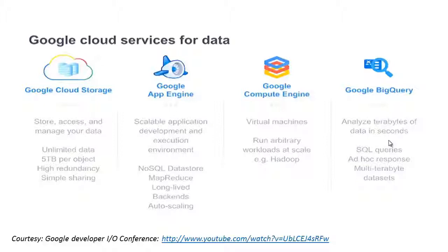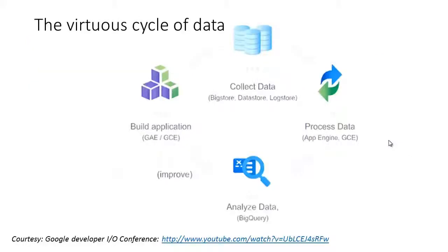BigQuery lets you query billions and billions of rows and get answers in mere seconds. Going back to our four data categories and mapping Google services to them: for collecting data you have Google Storage, Bigtable, Datastore, and Logstore. For processing data, you have App Engine and Google Compute Engine for MapReduce and similar tasks. For analyzing data, there's BigQuery, which we'll cover in much more detail. For building applications, again you have App Engine and Compute Engine.